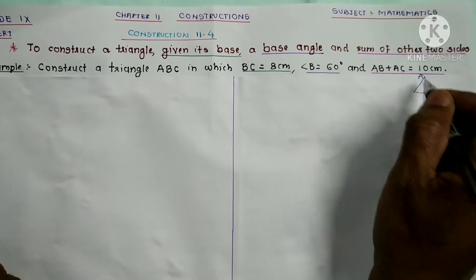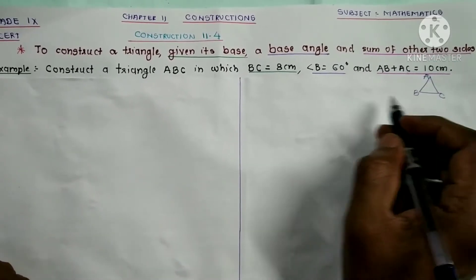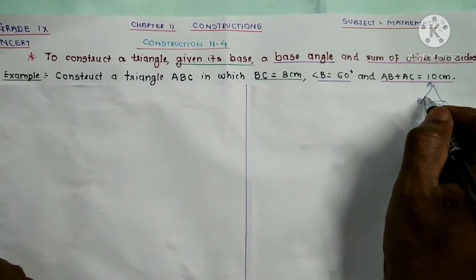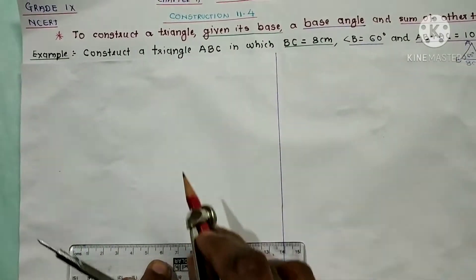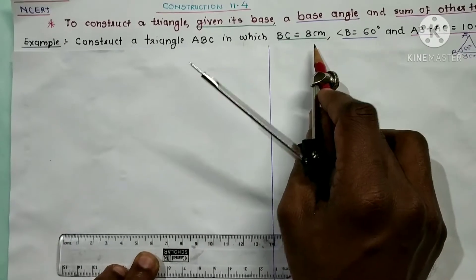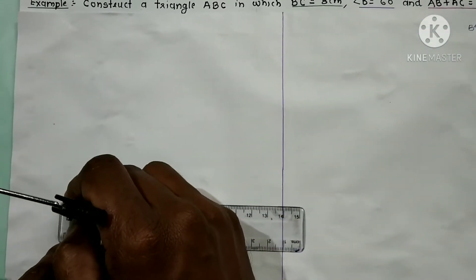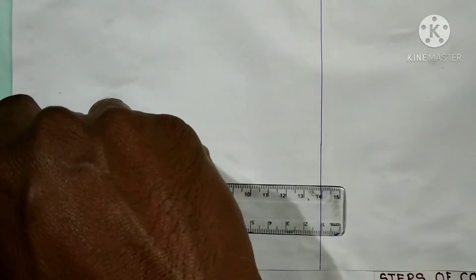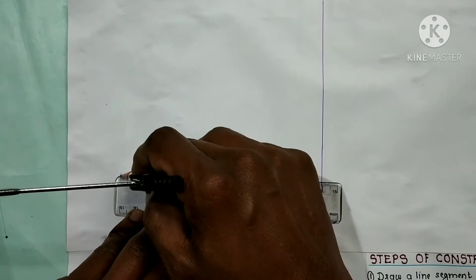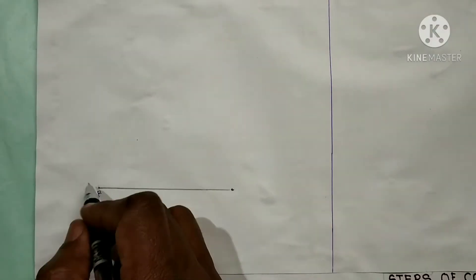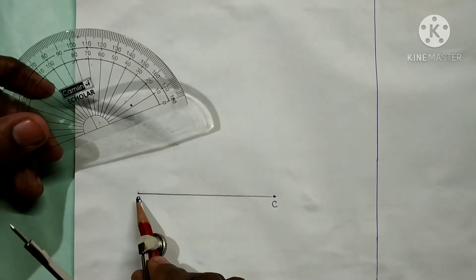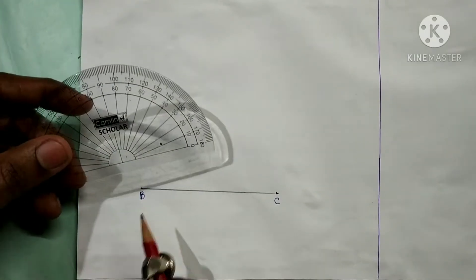So this is triangle ABC, and the base is 8 cm, Angle B is 60 degrees. To construct triangle ABC, the first step is to draw one line segment BC equal to 8 cm. So this is point 0 and this is 8, so we join these two points and mark them as B and C.